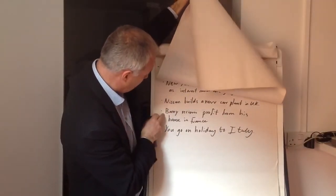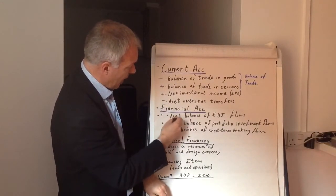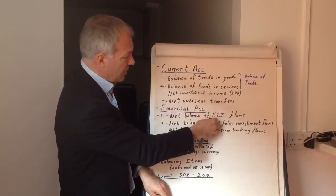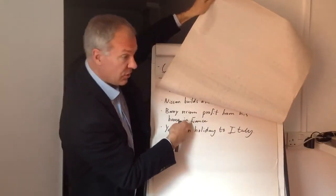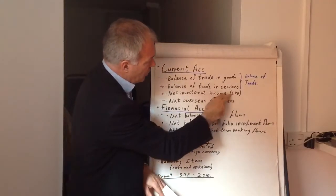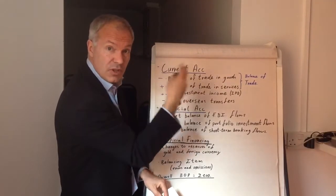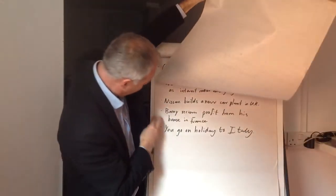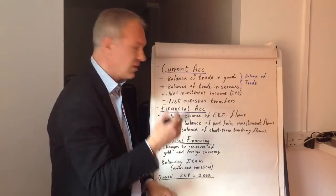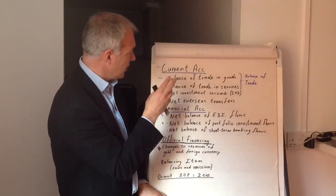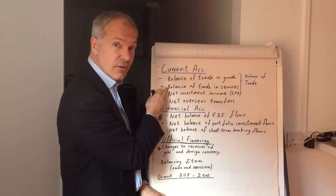Say Barrie buys a place in France — that would be a net minus financial outflow. He'd be selling pounds to buy a place in France, and it would be a capital flow. But say Barrie receives rent or profit from his place in France — that would be a positive, and it would be under interest, profits, and dividends, because he'd receive that rent or profit in pounds, selling euros and buying pounds. Finally, if you go on holiday abroad and spend lots of money, say in Siena in Italy, that would be an import and a negative on the balance of trade in services to pay for that lovely hotel in Siena.